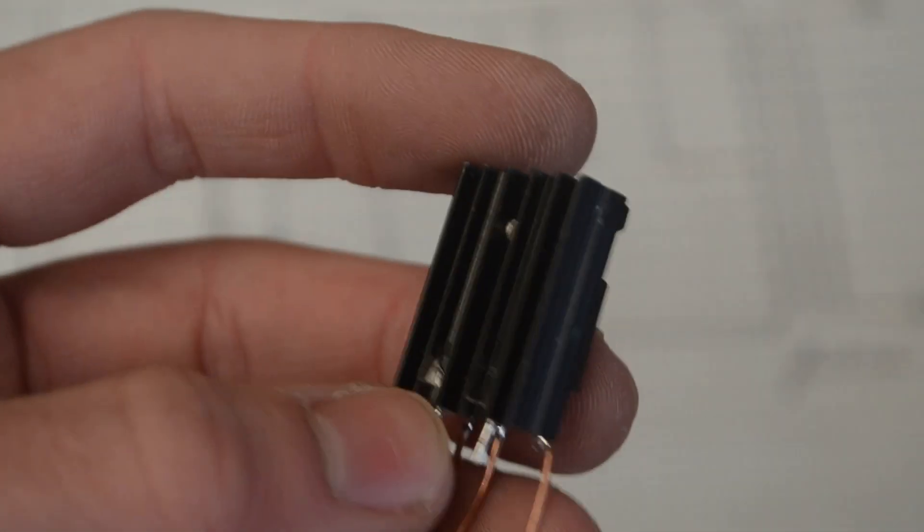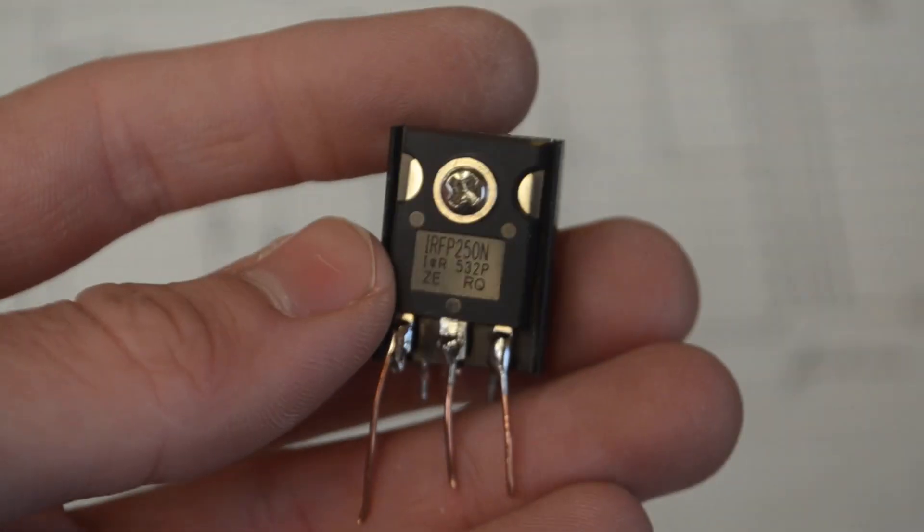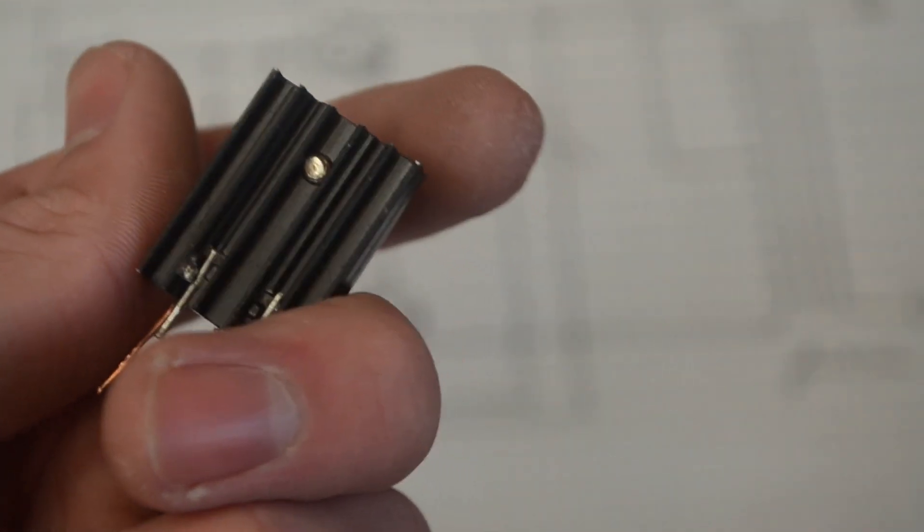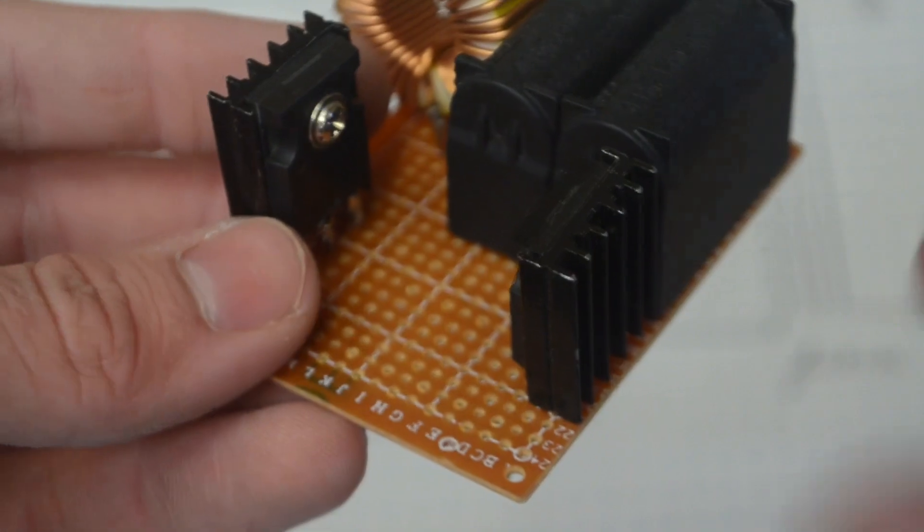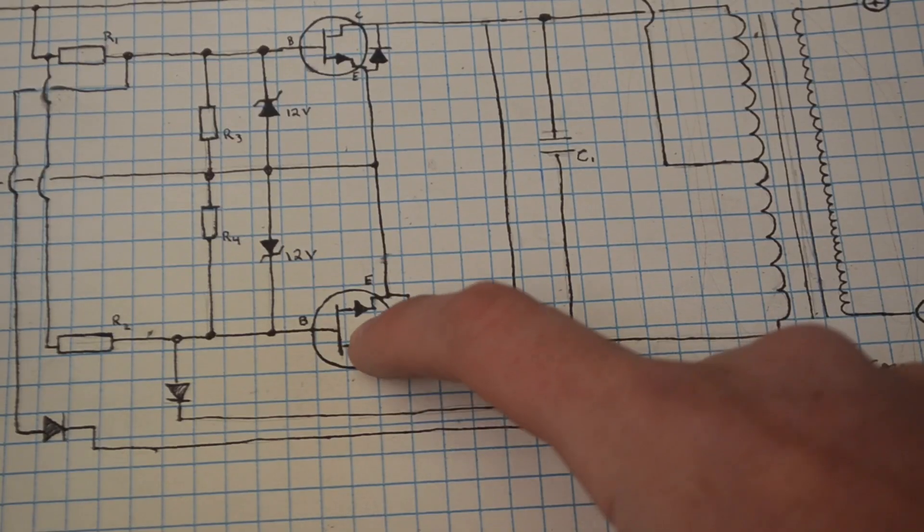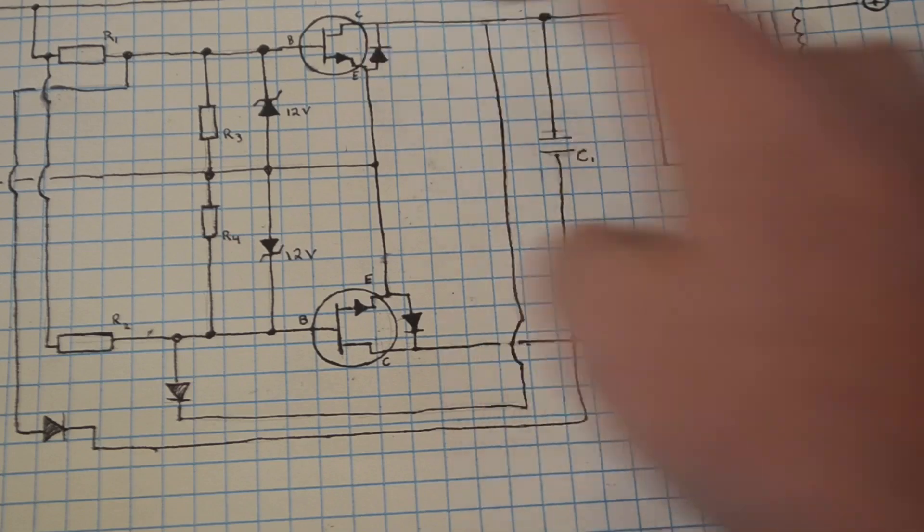You're also going to want to put a heatsink like I have on these MOSFETs. Since they're going to be passing quite a bit of power through them, this will let it so they can dissipate the heat a lot better. Okay so now I've inserted the two MOSFETs into the perf board. As you can see I have them facing each other. This way these MOSFETs will be in those two different configurations that we showed on the schematic.